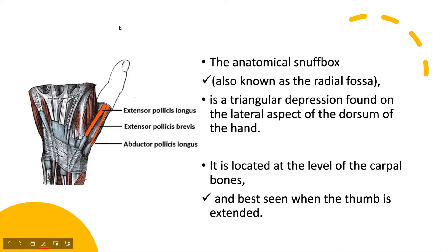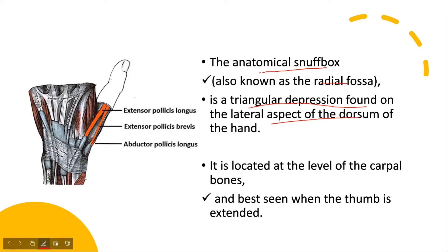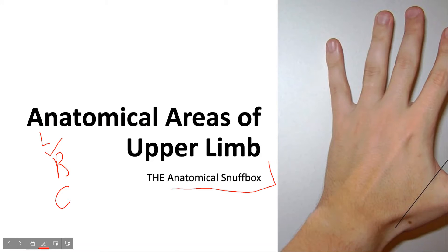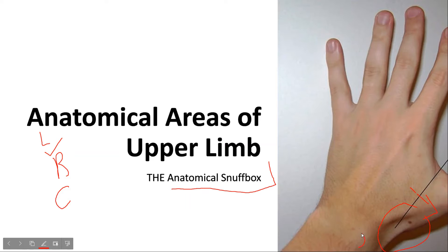The anatomical snuffbox is also called the radial fossa. It is defined as a triangular depression found on the lateral aspect of the dorsum of the hand. It is located at the level of the carpal bones and is best seen when the thumb is fully extended. Because it is on the radial aspect of the forearm, near the radius bone, it is also called the radial fossa.